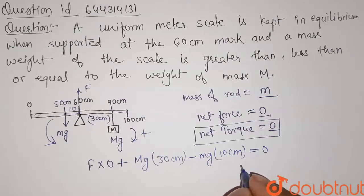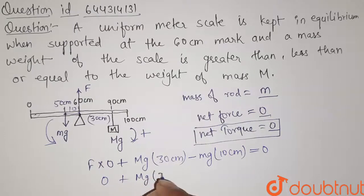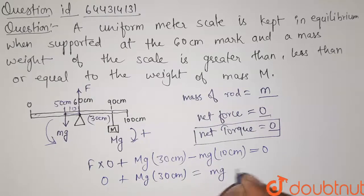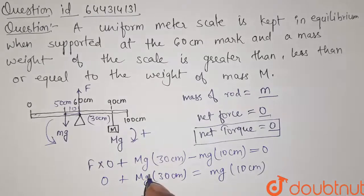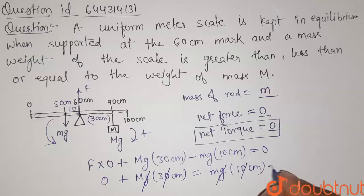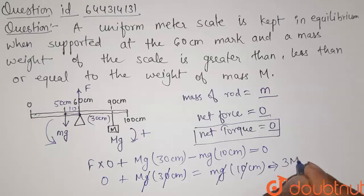So this is the equation. Now this term is zero. This is Mg 30 centimeter, and we can take this to other side, so it will be Mg 10 centimeter. Now G and G will get cancel out, and this will become 3 capital M is equals to small m.